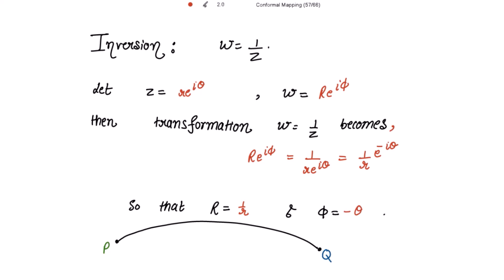Under the transformation w = 1/z, a point P in the z-plane having polar coordinates (r, θ) is mapped into the point Q in the w-plane having polar coordinates (1/r, -θ).